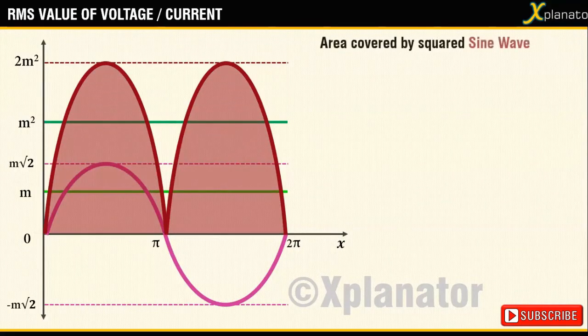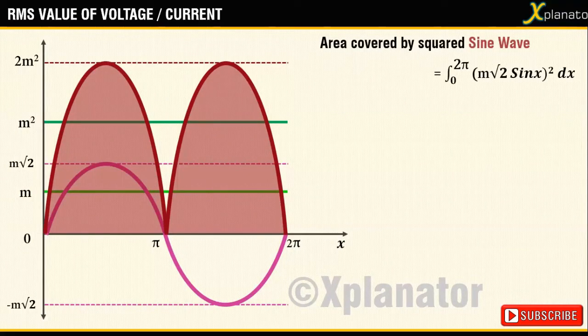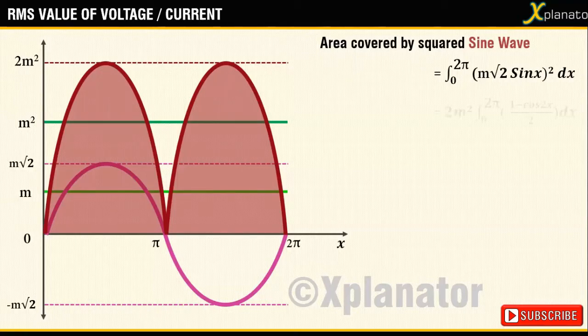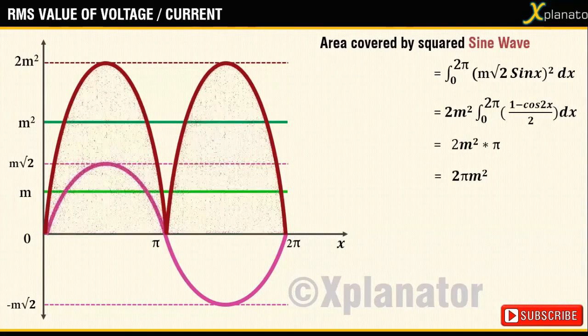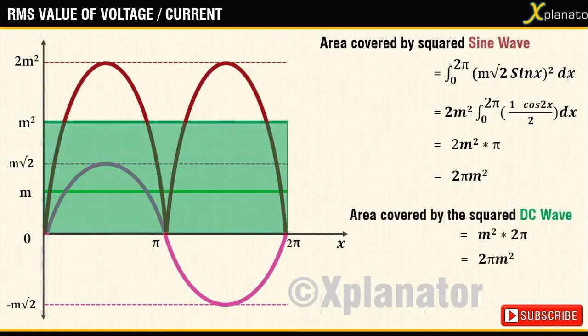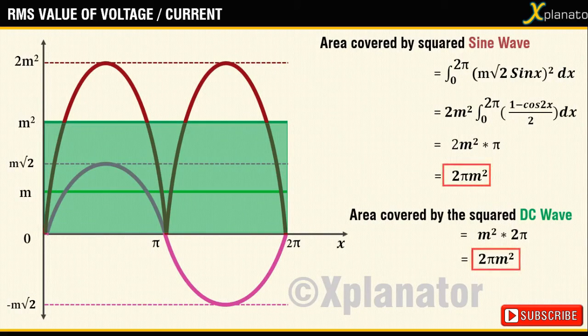The area occupied by this curve will be integral of m√2 sin x the whole square from 0 to 2π. And upon solving, the area will turn out to be 2m² × π and it is the same result that we obtained with the squared DC wave.